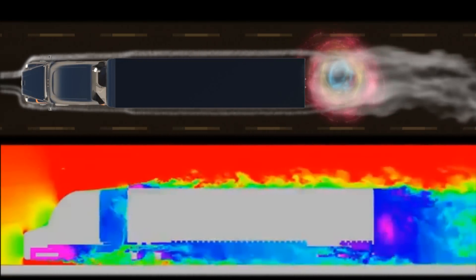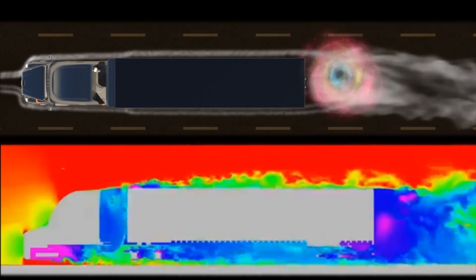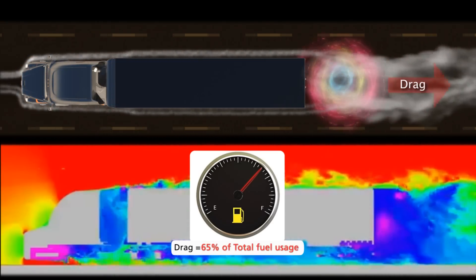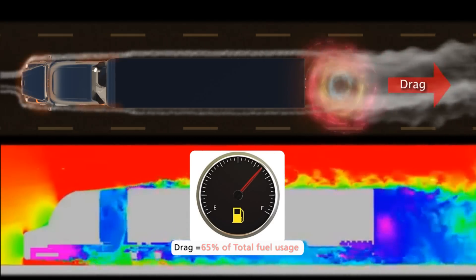One of the major constraints on improving fuel economy for transport vehicles has been aerodynamic drag, which contributes for over 65% of fuel consumption at highway speeds.